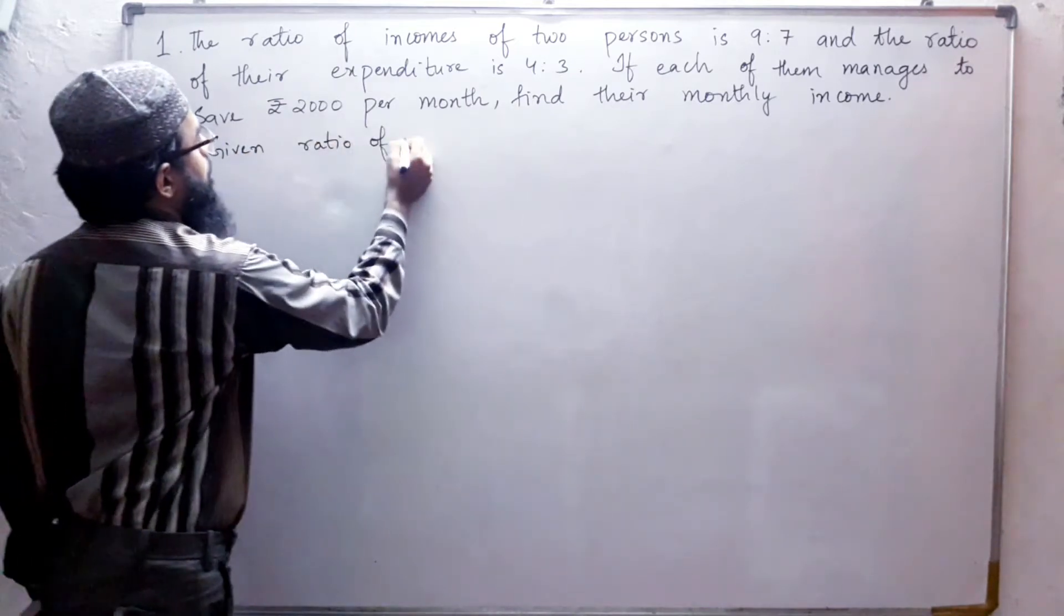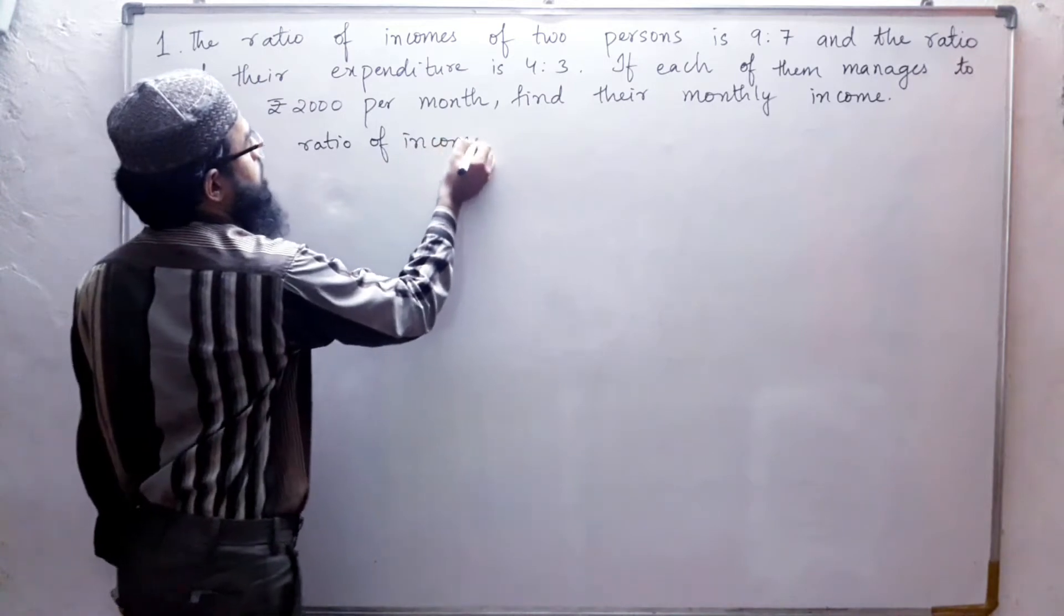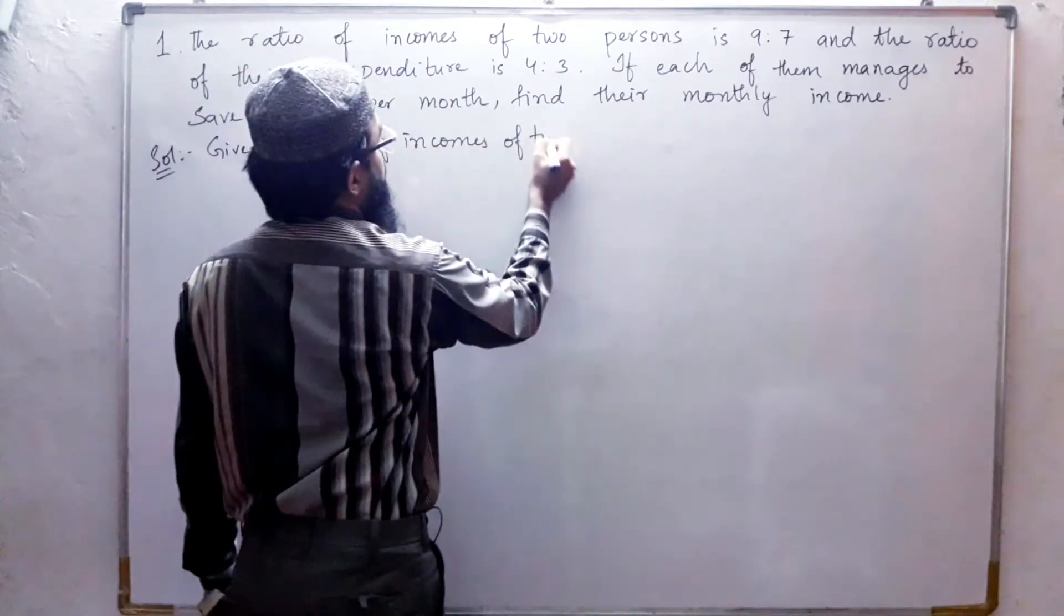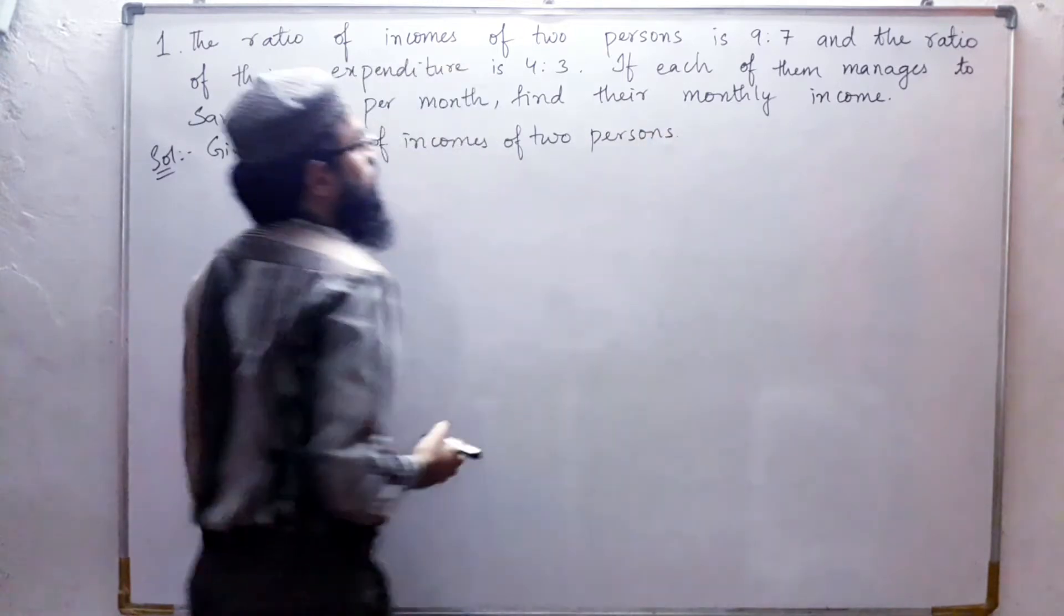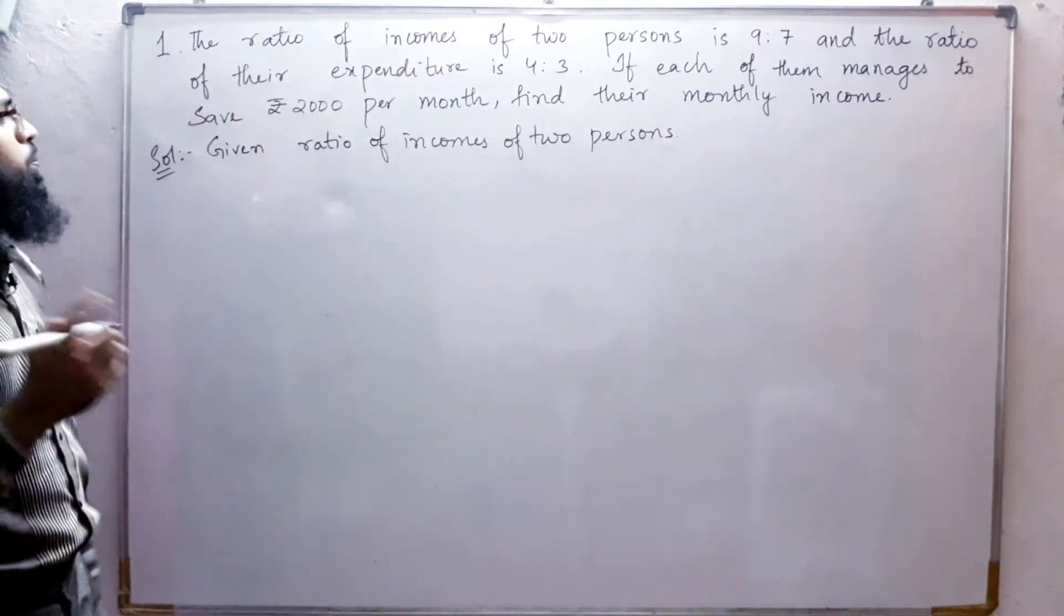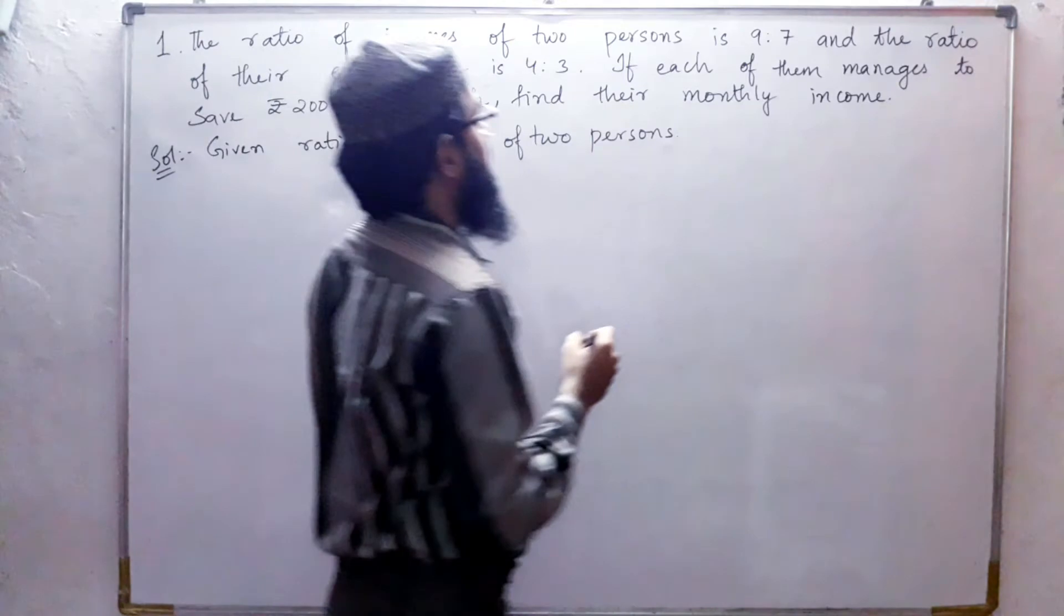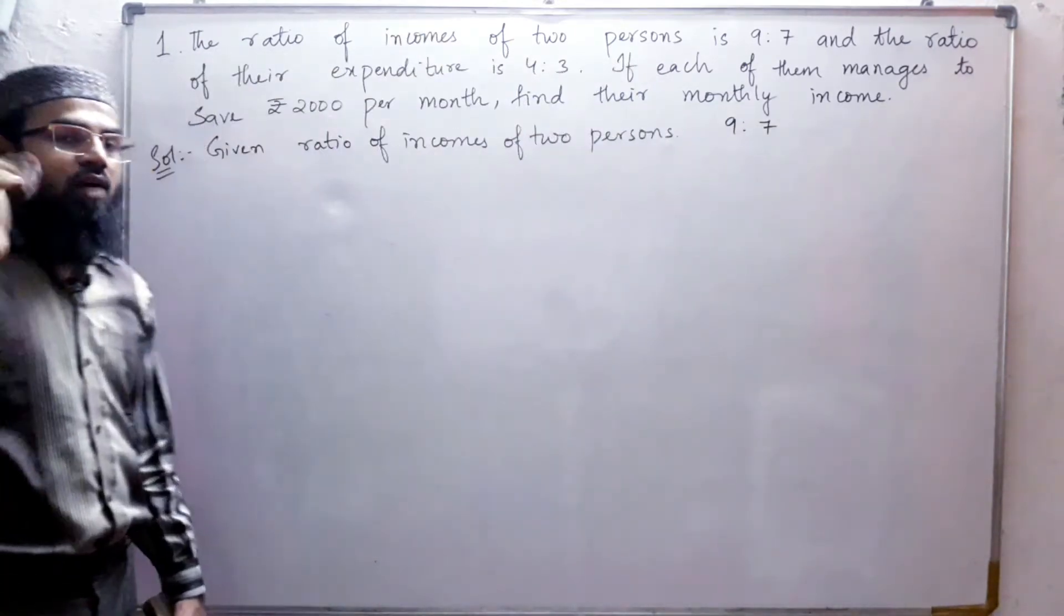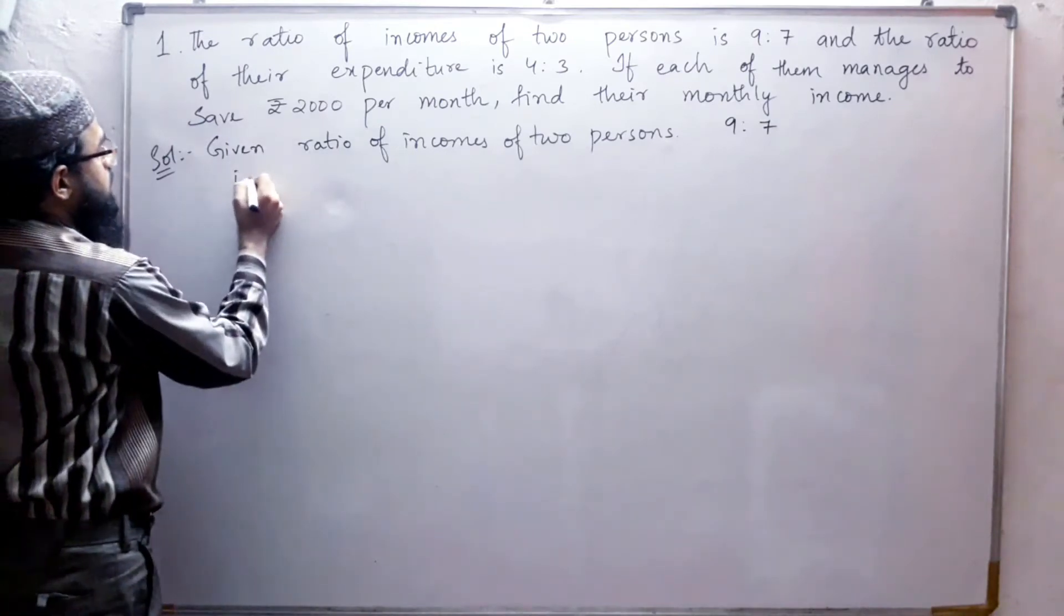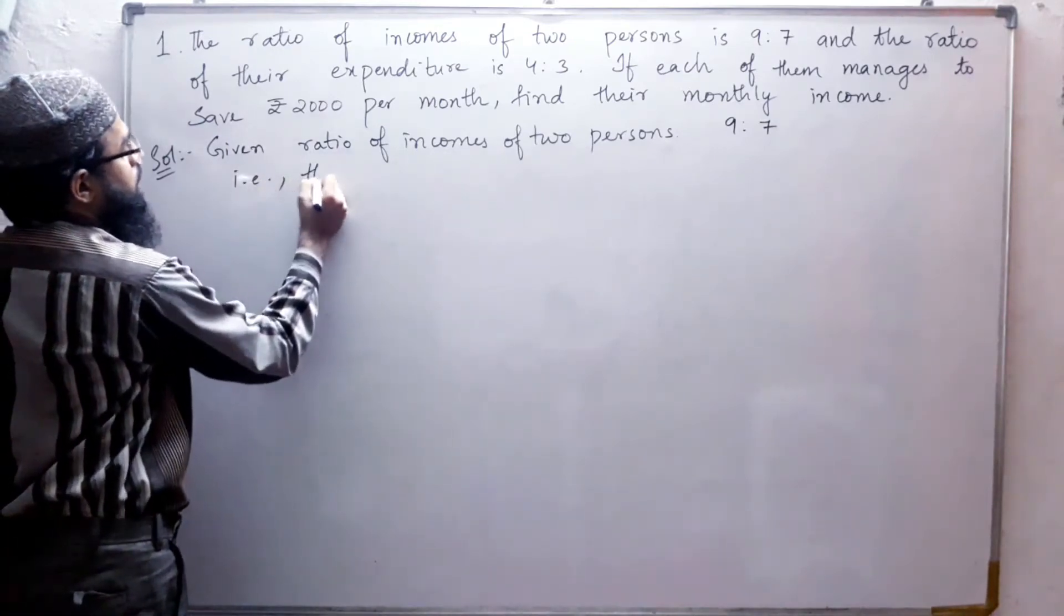Given: ratio of incomes of two persons is 9 to 7, so their incomes will be 9x and 7x.